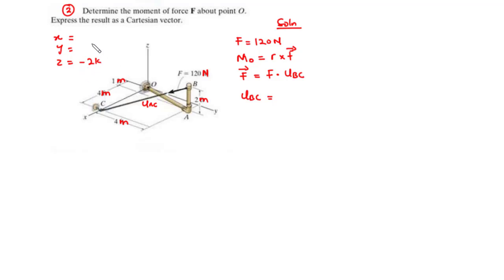The values we obtain are all in meters. At point A, we are moving along the Y axis towards O — this line is also parallel — so when you move towards O, you have a negative value, and the value is 4 meters, giving negative 4J. Then at the next point, you move along the X axis away from point O, which is a positive value, giving 4I.